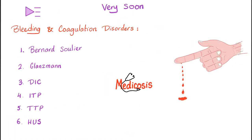Coming very soon this month: bleeding and coagulation disorders in my playlist called Bleeding and Coagulation — including topics such as von Willebrand disease, Glanzmann's, DIC, ITP, TTP, HUS, Heparin, Warfarin, Abciximab, Tirofiban, Eptifibatide, Clopidogrel, Prasugrel, and so on.